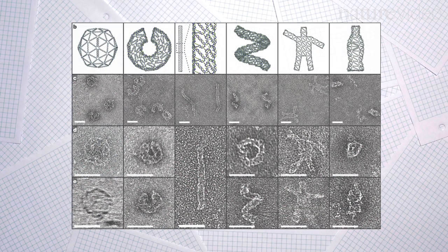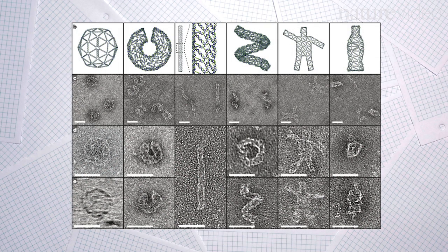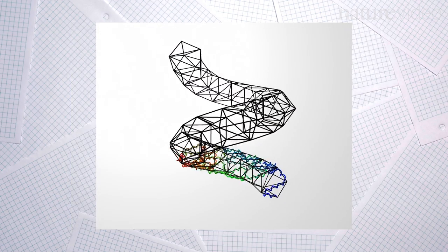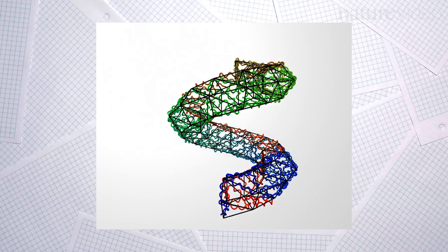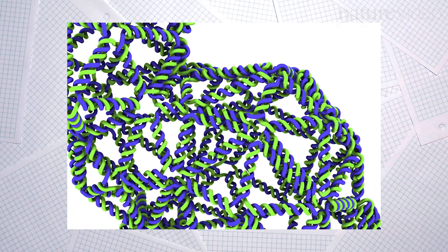The first DNA origami creations were all flat shapes. But other DNA nanotechnology groups soon started to develop three-dimensional structures. Over the last ten years, even more complex shapes have been created, even DNA bunnies.